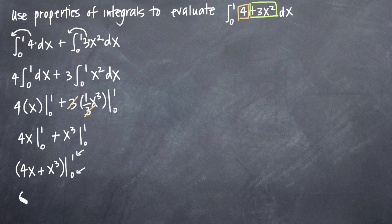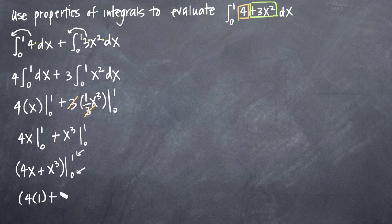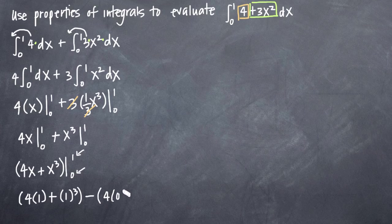So we'll plug in 1 first. We'll get 4 times 1 plus 1 cubed. And then we always subtract whatever we get when we plug in the bottom number, in this case 0. So 4 times 0 plus 0 cubed, like this.